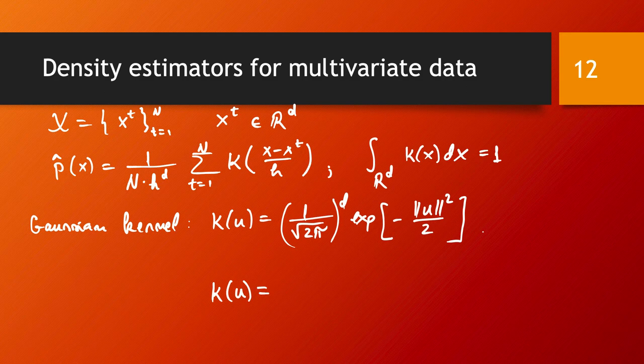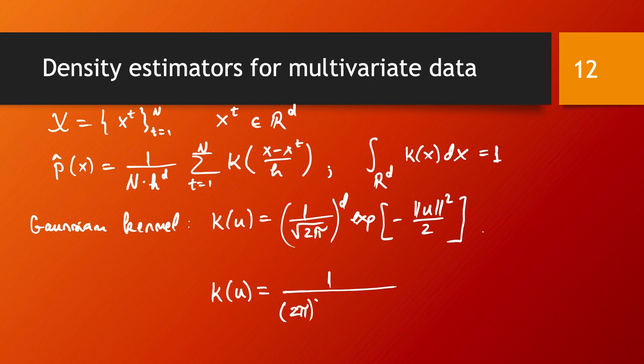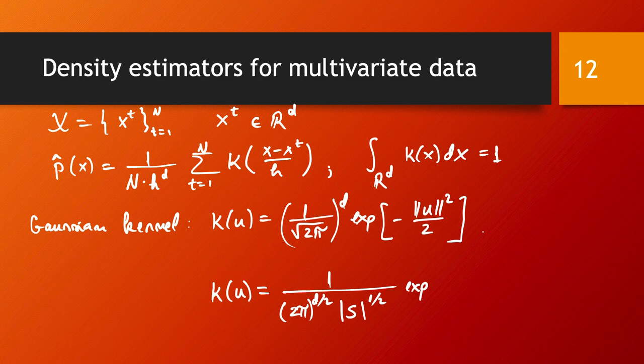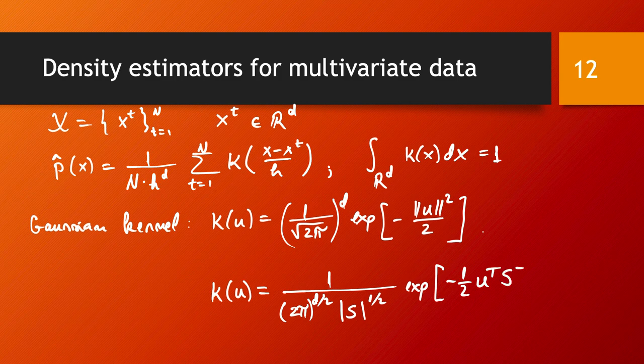And in this case, in fact, you should take the covariance matrix into account and you would have, in this case, 1 over 2 pi to power d over 2 times the determinant of S to power 1 over 2 times exponent of minus 1 over 2 u transposed S to power minus 1 u, where obviously S is the sample covariance matrix.